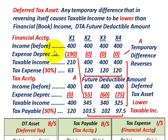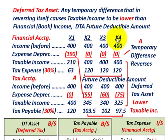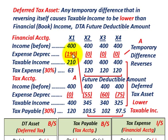Starting with our expense item, we're going to look at the timing for financial accounting versus tax accounting over four years, X1 through X4. For financial accounting, let's say we have a depreciation expense. We recognize the entire expense in the first year, X1, of $190,000 — everything is in thousands — and zero expenses are recognized in years X2 through X4.